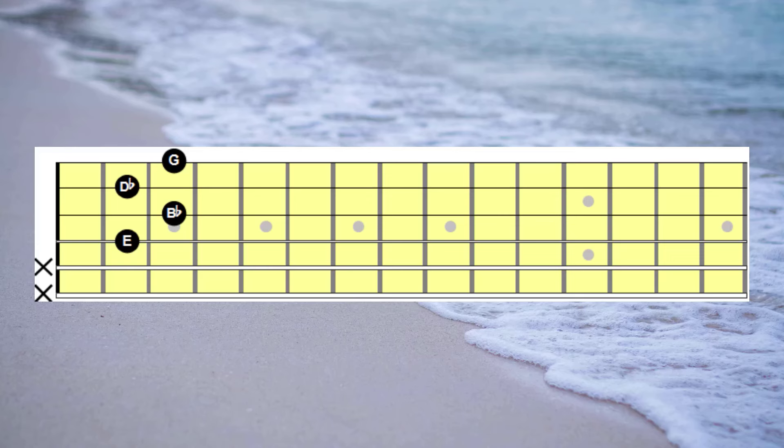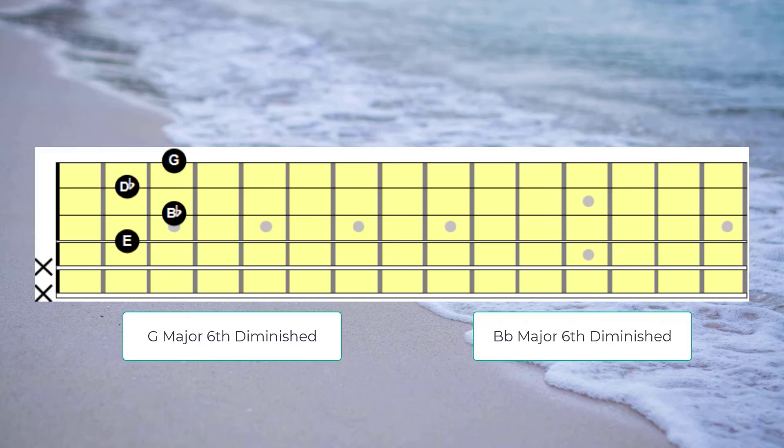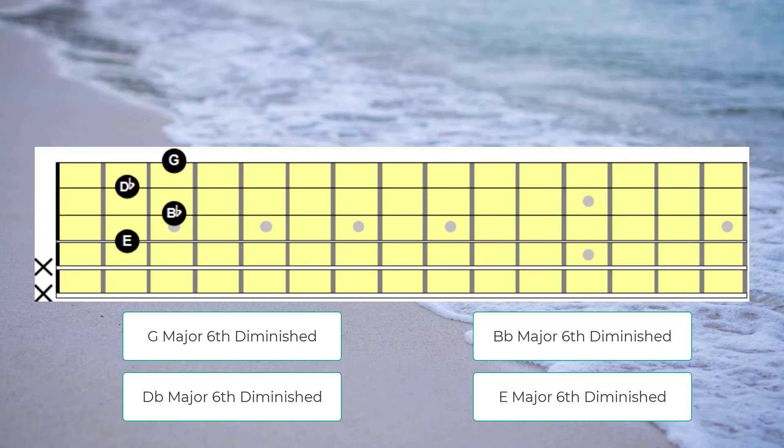Our first project will be to play a major sixth diminished scale using each note of the diminished seventh chord in the chord shape that you see in front of you. In other words we'll play a harmonized G major sixth diminished scale, a B flat major sixth scale, D flat major sixth scale and an E major sixth scale.